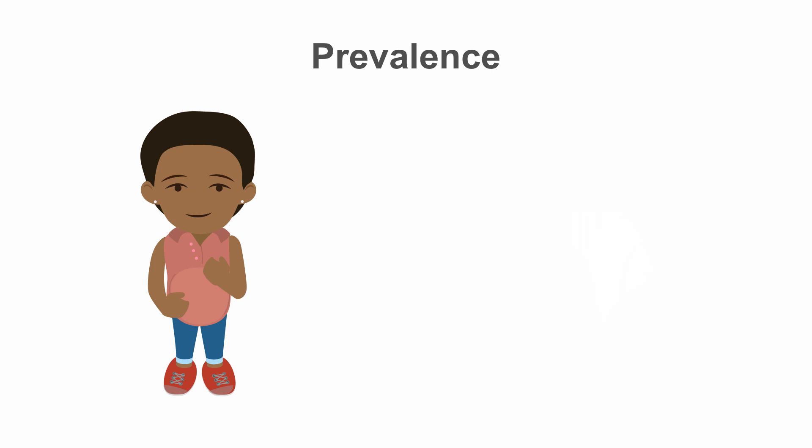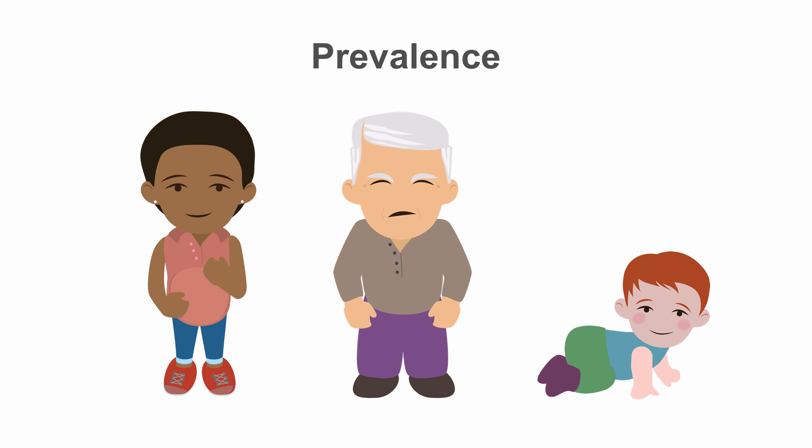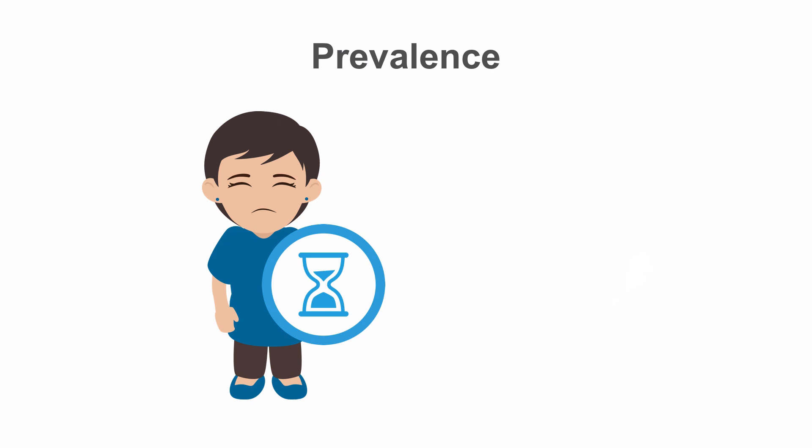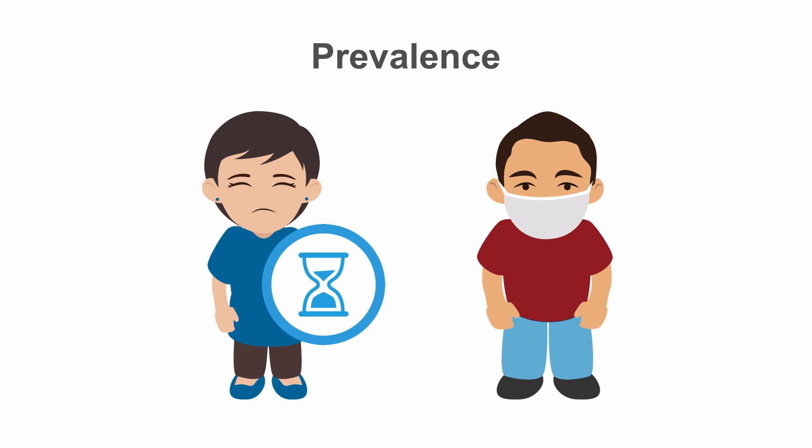Sepsis is most common and most dangerous in pregnant women, older adults, and children under one year old, people with chronic health conditions like diabetes, kidney or lung disease, or cancer, and immunocompromised individuals. It is therefore important to quickly and efficiently diagnose sepsis, especially in these patient populations, so that treatment can be initiated immediately.